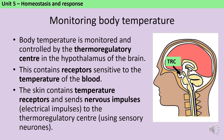Body temperature in animals is regulated by a cluster of cells in the hypothalamus area of the brain called the thermoregulatory center, or TRC for short. This cluster of cells contains receptors which are sensitive to the temperature of the blood, so as the blood flows through the brain it has its temperature taken. In addition, the skin contains temperature receptors which identify changes in temperature and send electrical impulses — called nervous impulses — to the thermoregulatory center using the sensory neuron pathway.